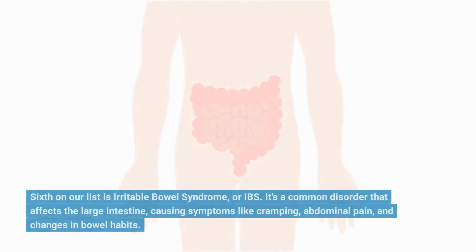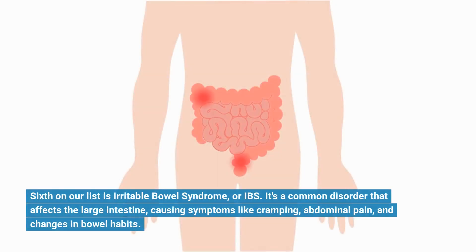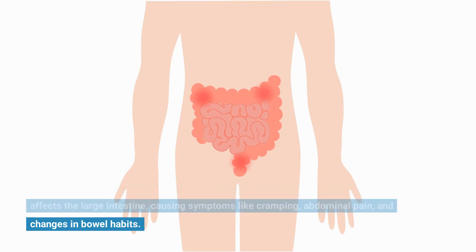Sixth on our list is irritable bowel syndrome, or IBS. It's a common disorder that affects the large intestine, causing symptoms like cramping, abdominal pain, and changes in bowel habits.